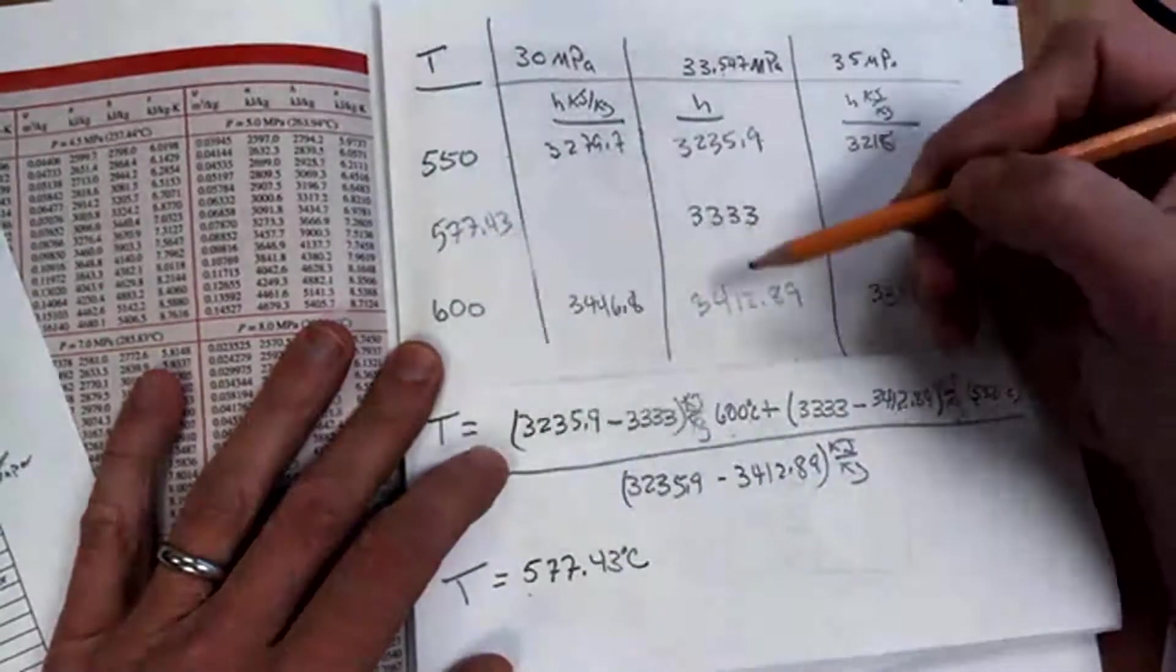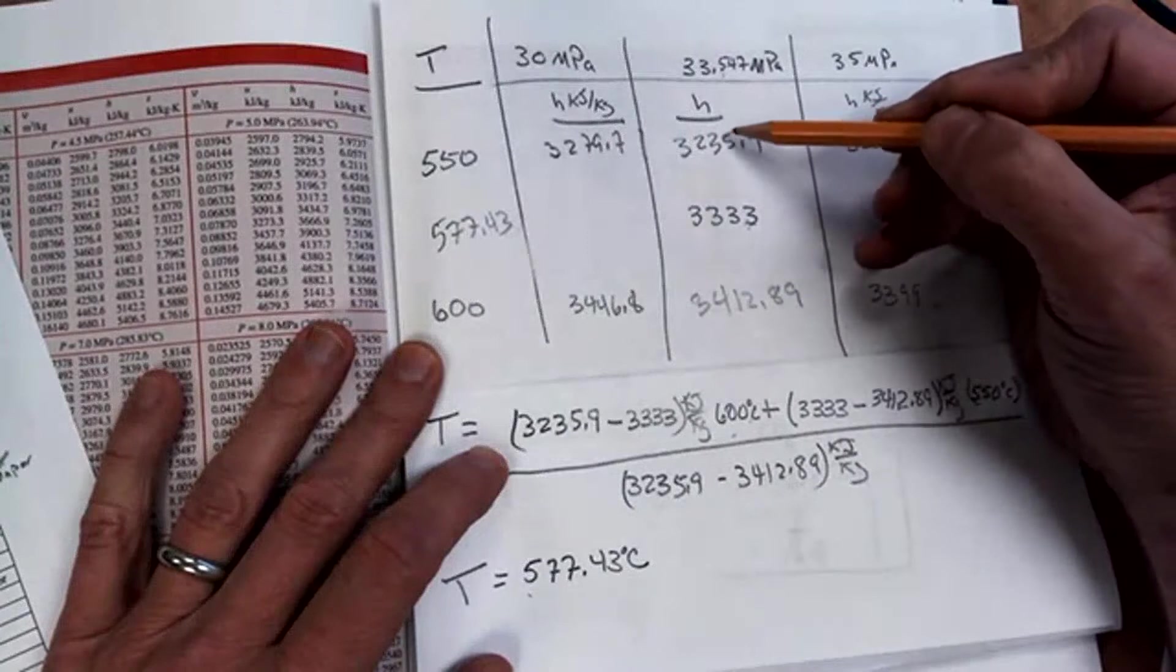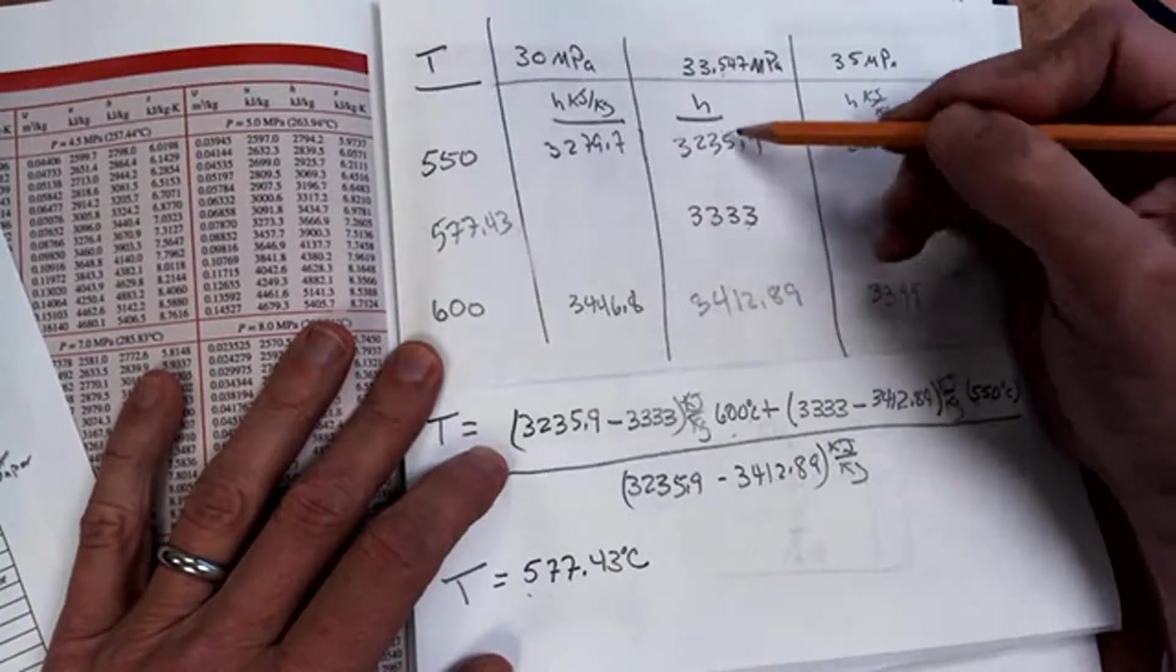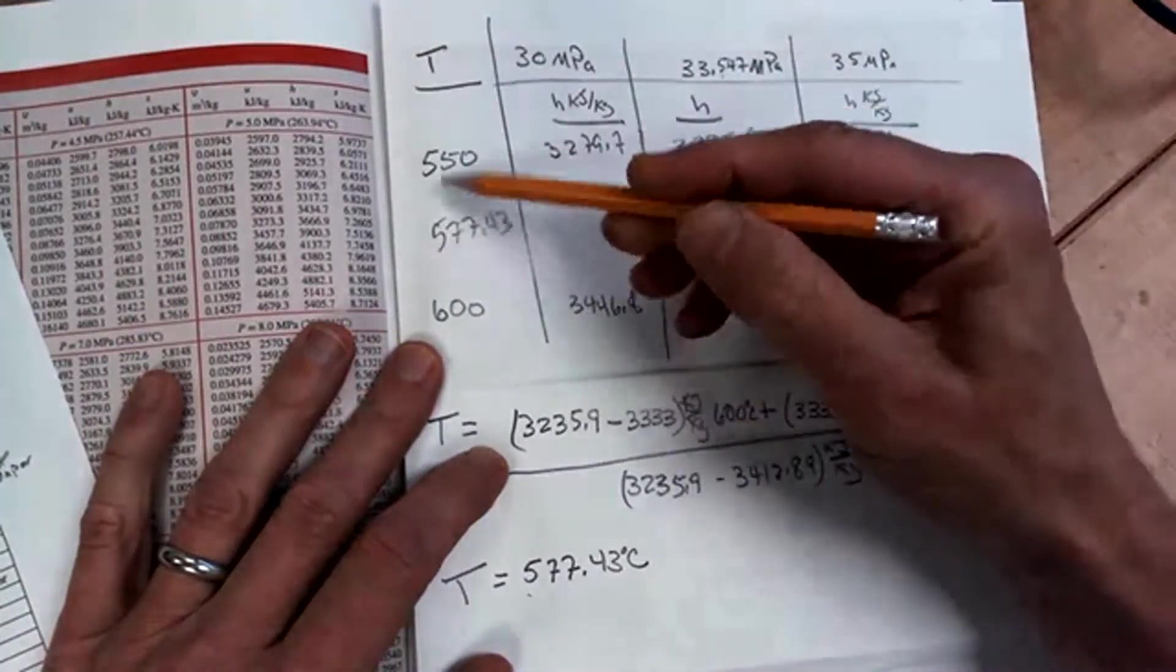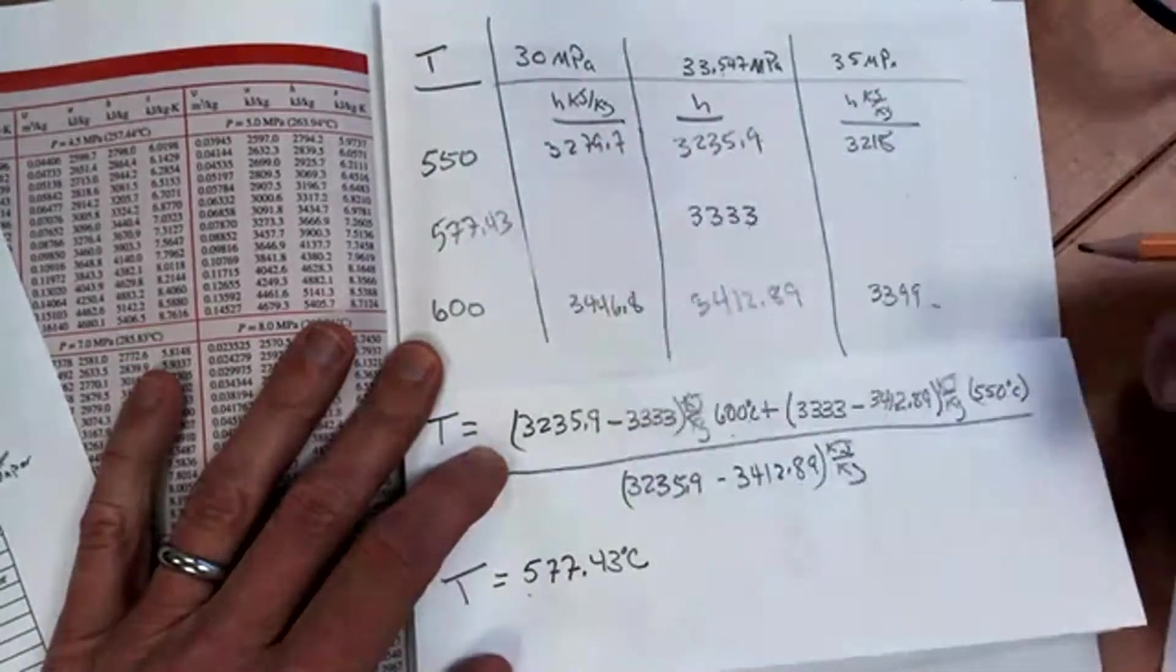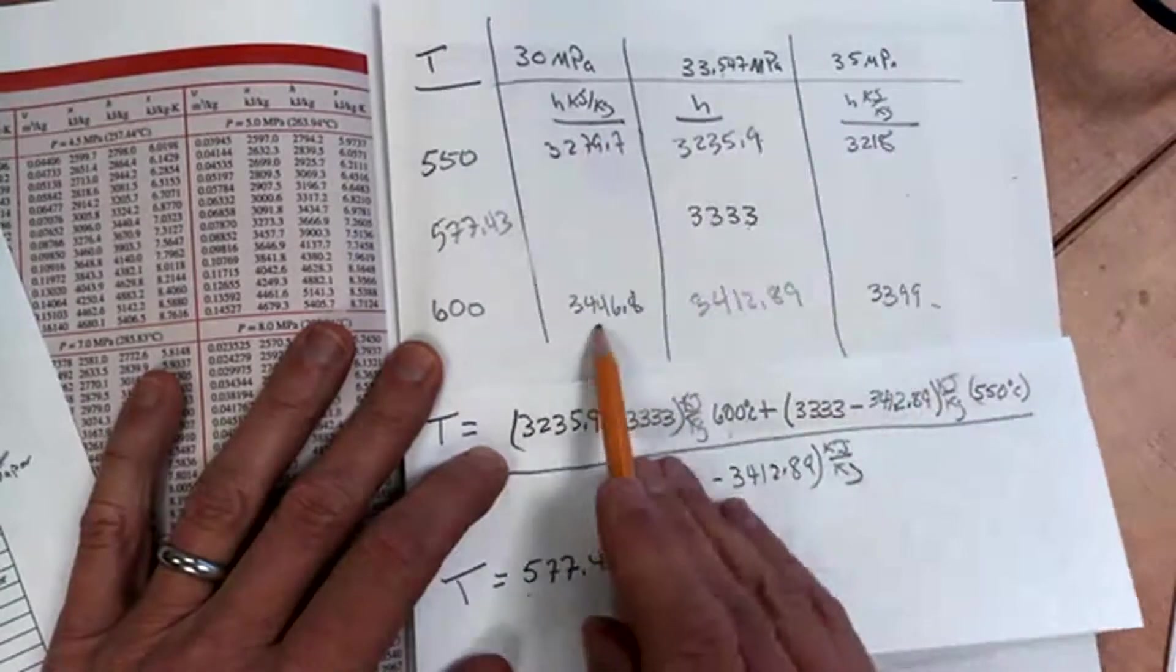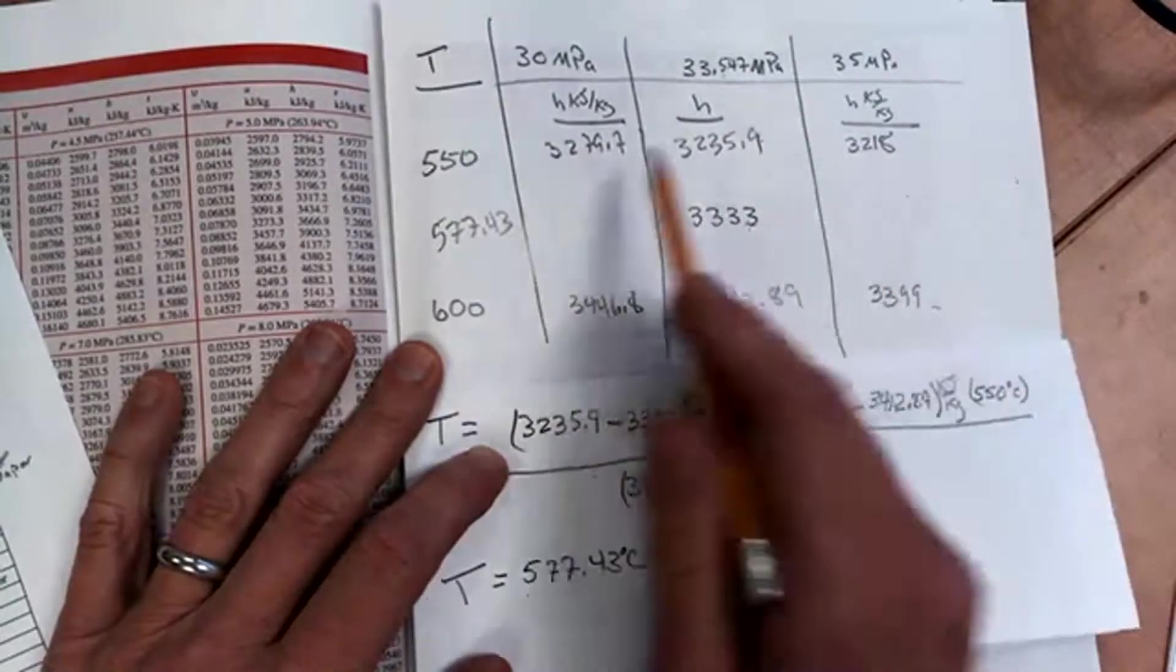And of course, you're going to look at this and see if this makes sense. 3,333 is pretty close to about halfway between these two. And so I would expect this value of temperature to be about halfway between those two, which makes a lot of sense. And you should spot check all of these because a slight math error will give you the wrong value.